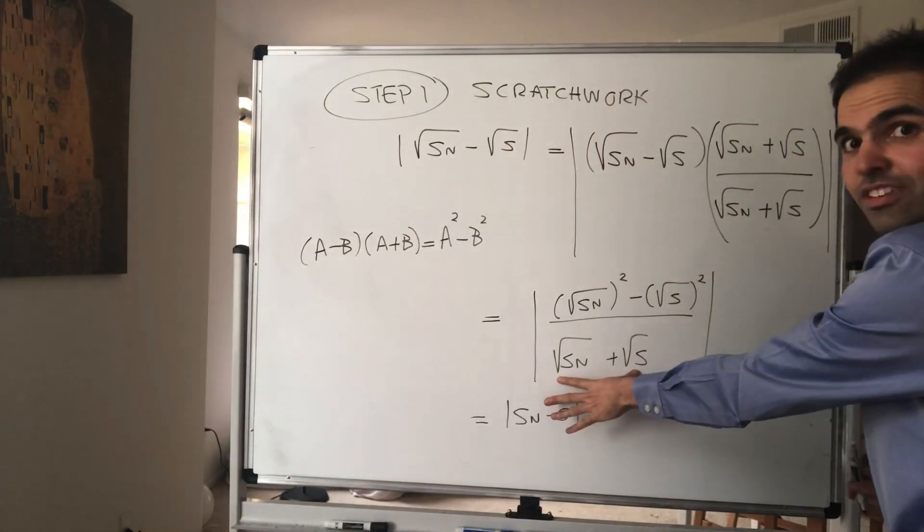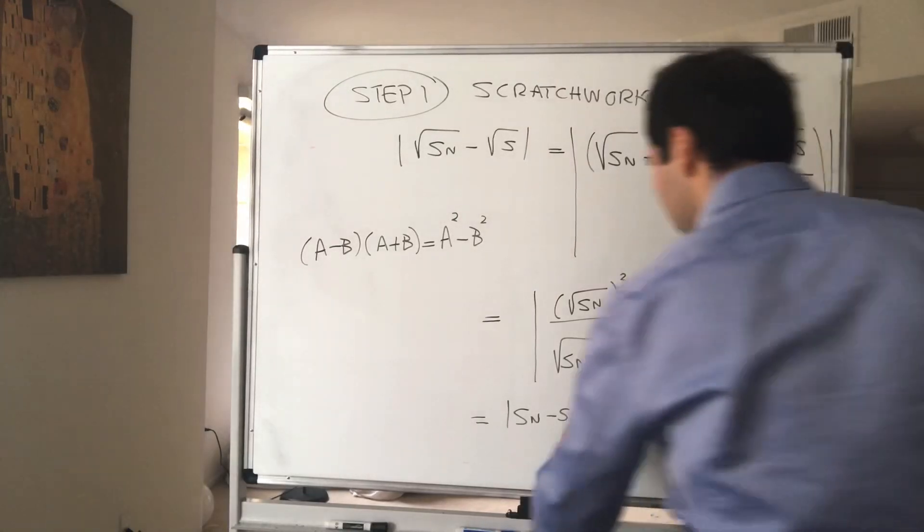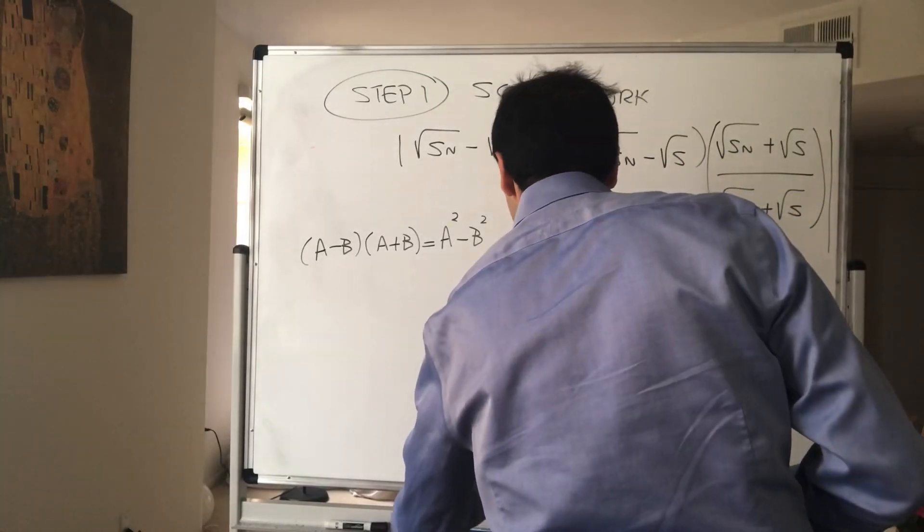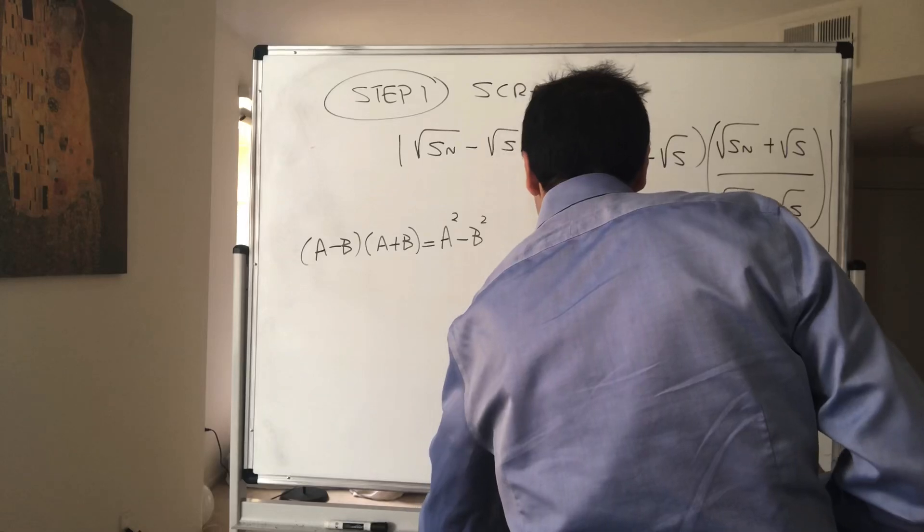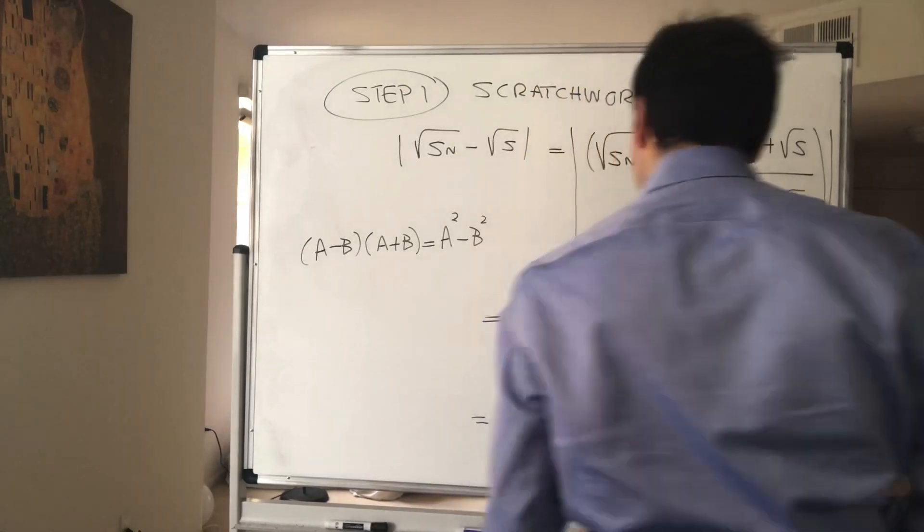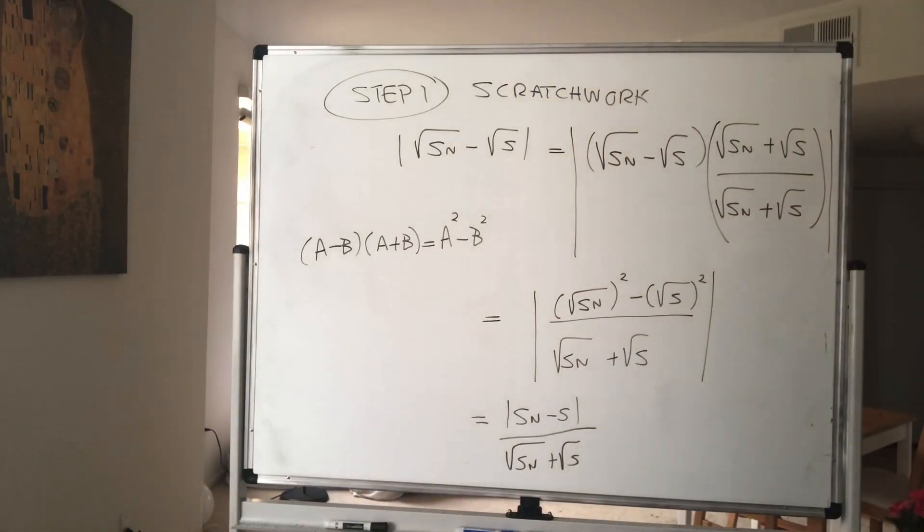Over square root of Sn plus square root of s. Which just becomes Sn minus s in absolute value divided by this positive number, square root of Sn plus square root of s. So really for the denominator we can just remove the absolute values.